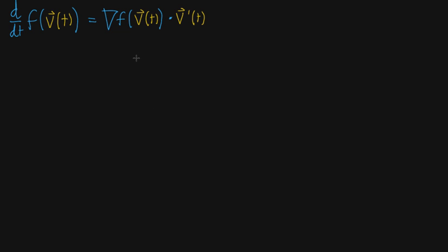Hello everyone. So this is what I might call a more optional video. In the last couple videos I talked about this multivariable chain rule, and I gave some justification, and it might have been considered a little bit hand-wavy by some. I was doing a lot of things that looked kind of like taking a derivative with respect to t, and then multiplying that by an infinitesimal quantity dt.